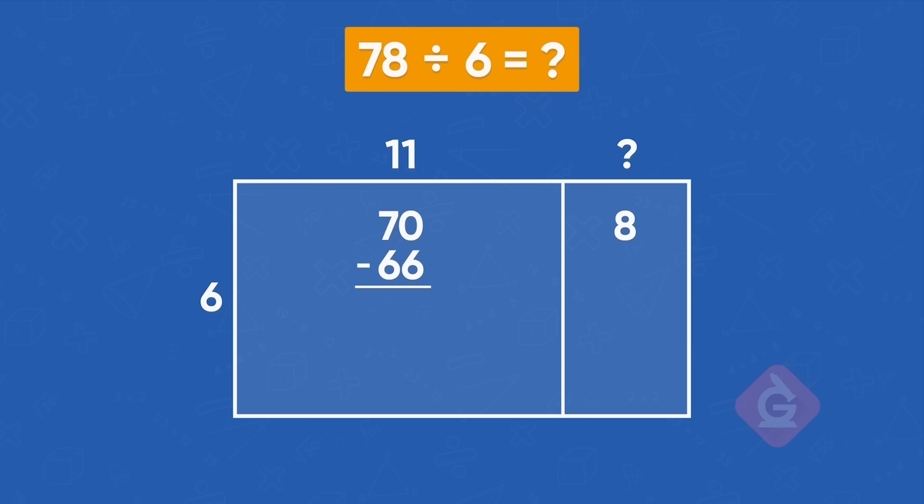Correct. Now we need to find out how much area is left. 70 minus 66 is 4. Very good. Now we move this leftover area to the next section. 8 plus 4 equals 12.